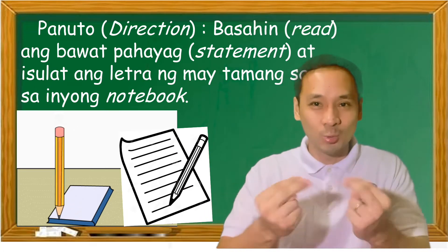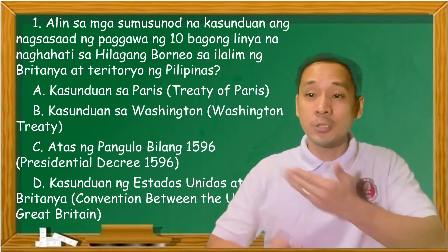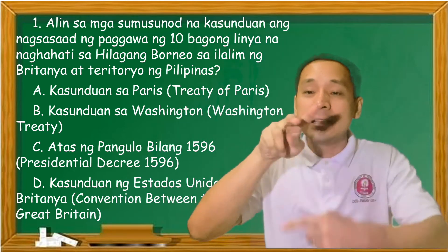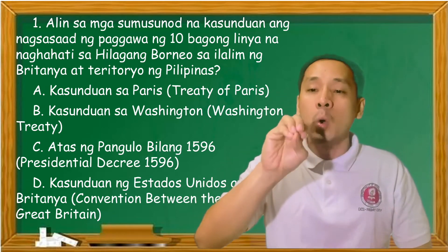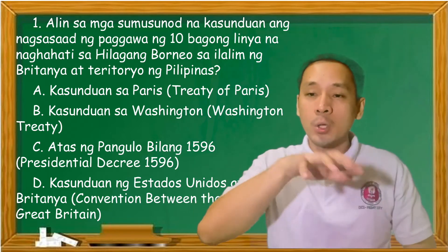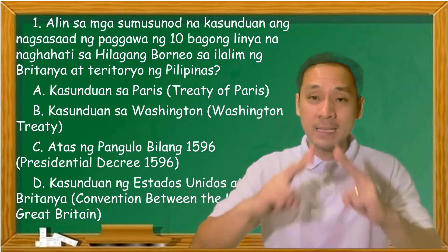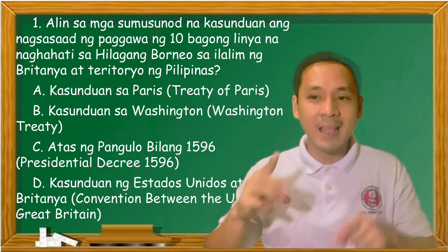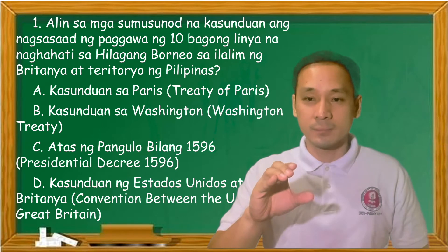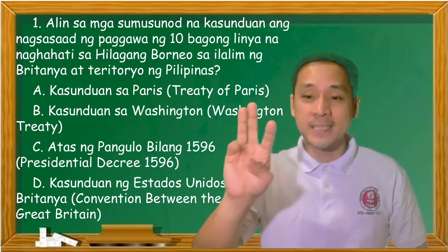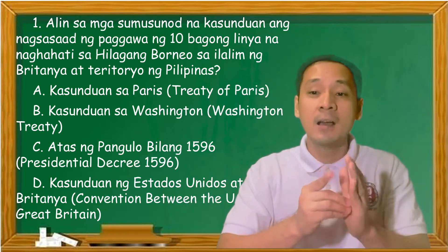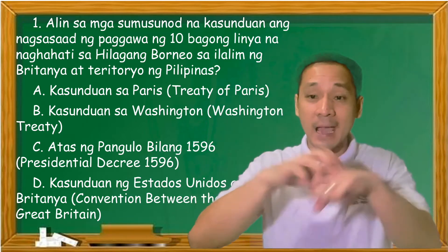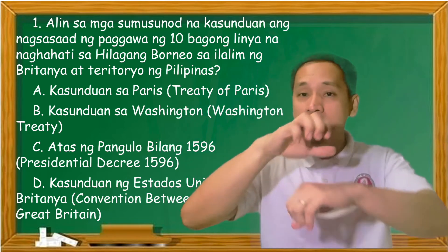Basahin ang bawat pahayag at isulat ang tamang sagot sa inyong notebook. Number 1: Aling sa mga sumusunod na kasunduan ang nagsasaad ng paggawa ng 10 bagong linya na naghahati sa Hilagang Borneo sa ilalim ng Britanya at teritoryo ng Pilipinas? A — Kasunduan sa Paris o Treaty of Paris; B — Kasunduan sa Washington o Washington Treaty; C — Atas ng Pangulo Bilang 1596 o Presidential Decree 1596; D — Kasunduan ng Estados Unidos at Gran Britannia o Convention between the United States and Great Britain.